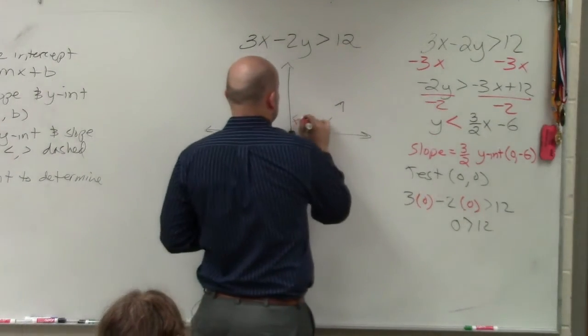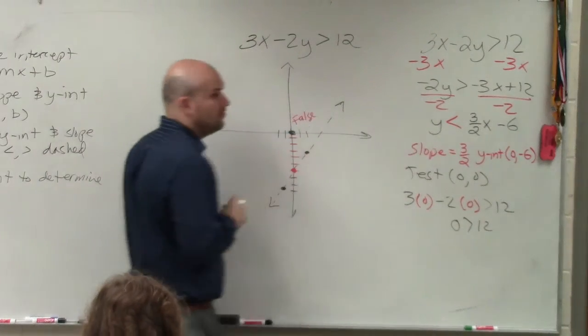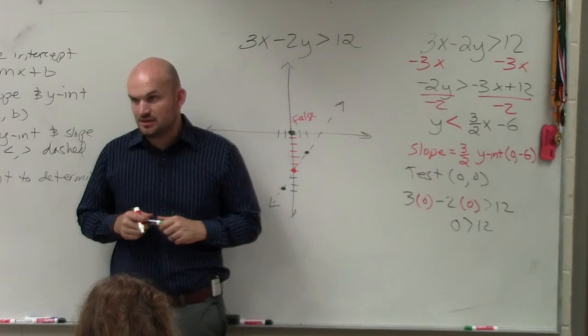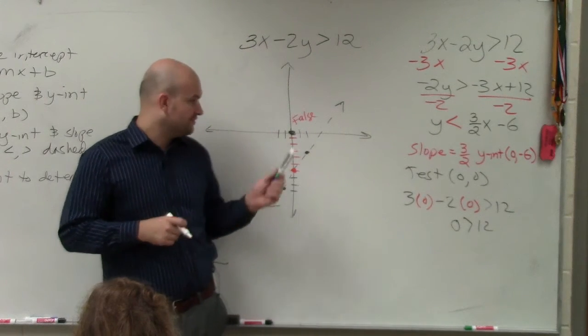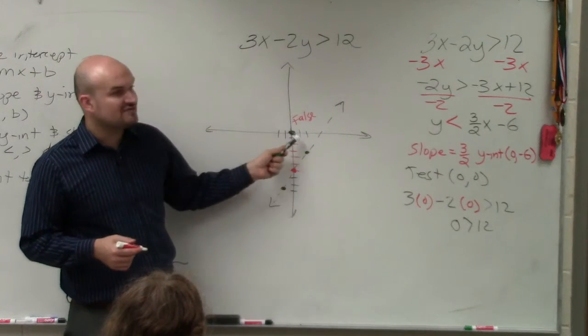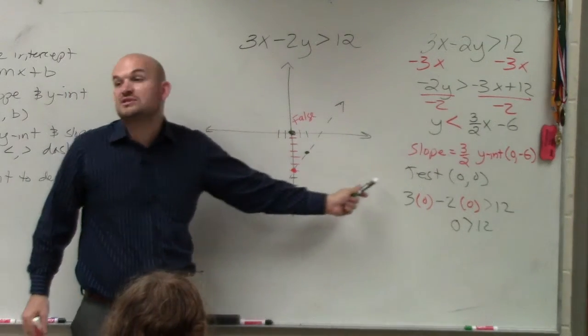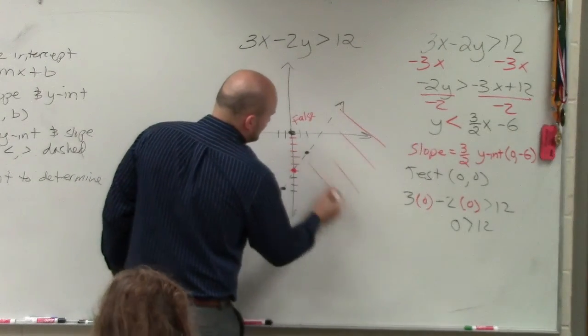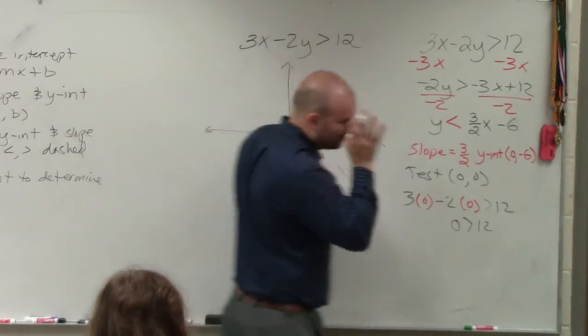So the little tip for you guys, if one point is false above the line, all points above the line are false. So if you guys would have chosen any point above here, it always would have made a false statement. So if it's false, that means all the points below are true. So we're just going to draw some lines to represent those true solutions.